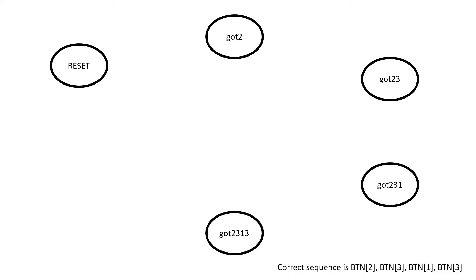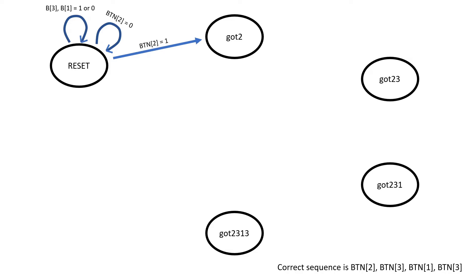The first state is the reset state, which is also the default state — all outputs are low. If button 2 is 0, we stay in the reset state because we're looking for button 2 as the first part of the sequence. If button 2 goes high, we move into the 'got2' state, meaning we got button 2. We don't care what button 3 or button 1 are, since we're only looking at button 2 in this state.